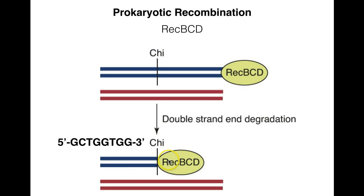REC-BCD hits the chi-site while working both its exonuclease activities and unwinding the strand. At the chi-site, the three-prime to five-prime exonuclease activity decreases, whereas the five-prime to three-prime exonuclease activity increases. This leaves an overhang on one strand — specifically a three-prime overhang, which matches the pictures from the double-strand break repair model.